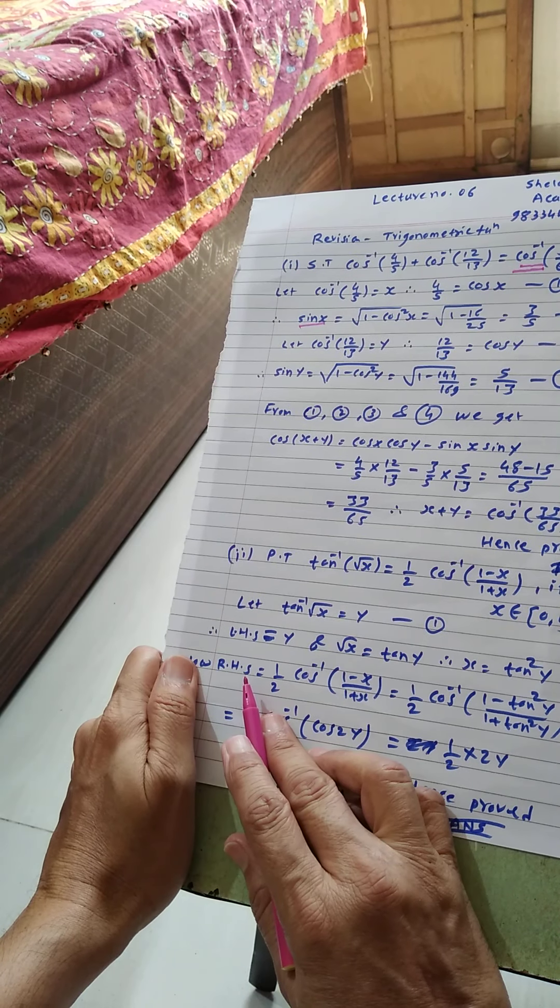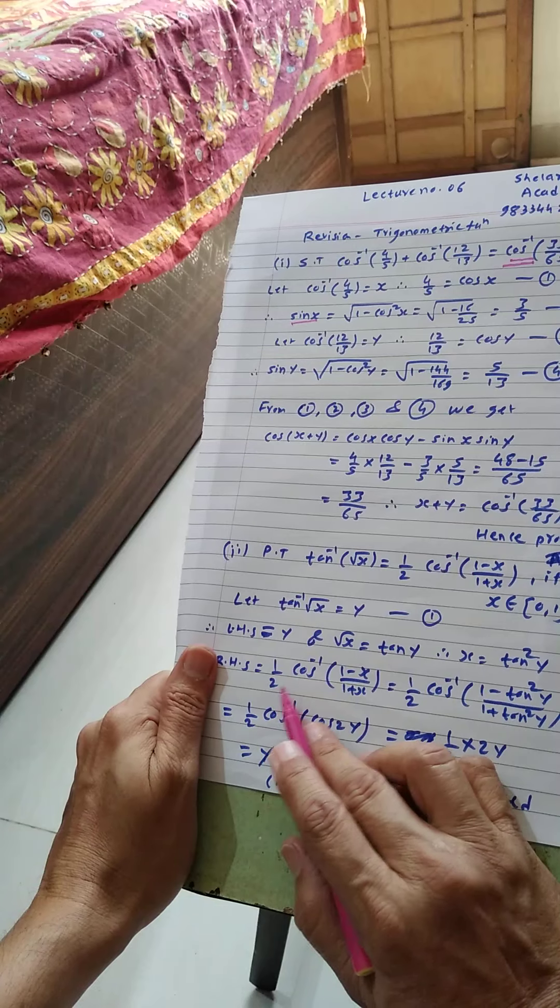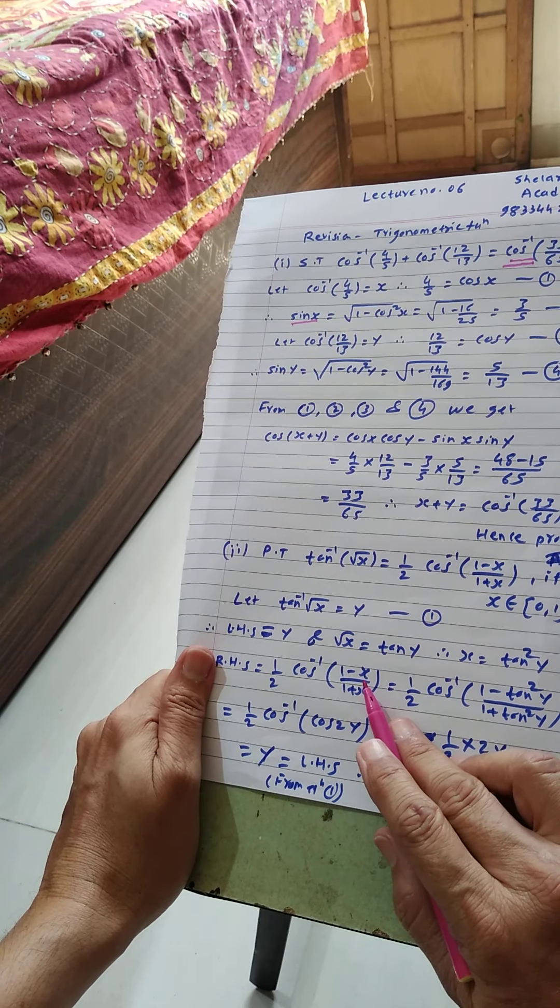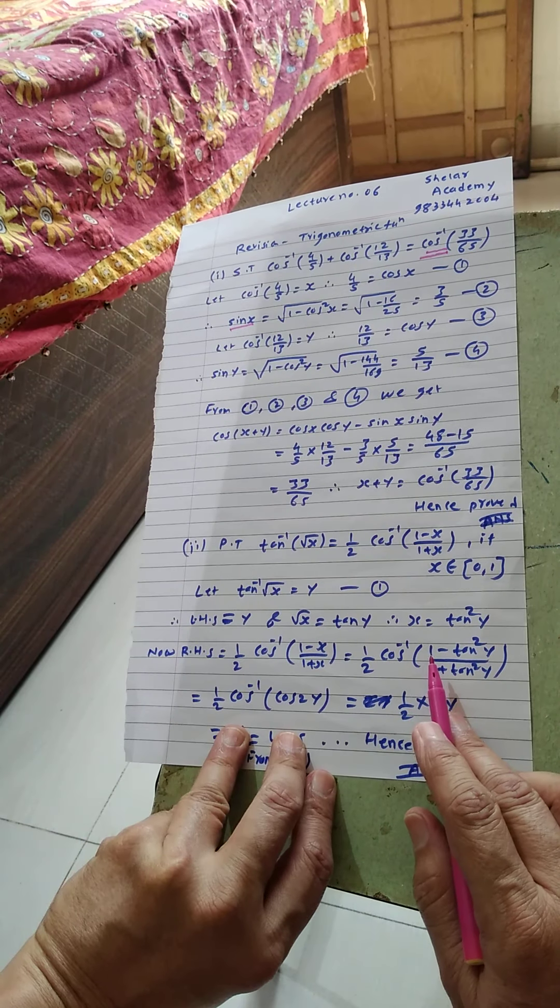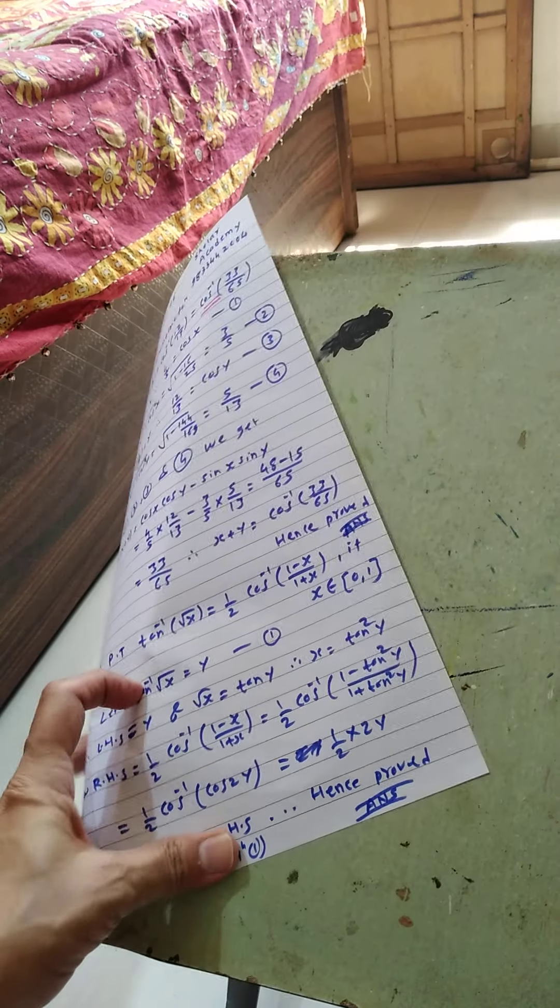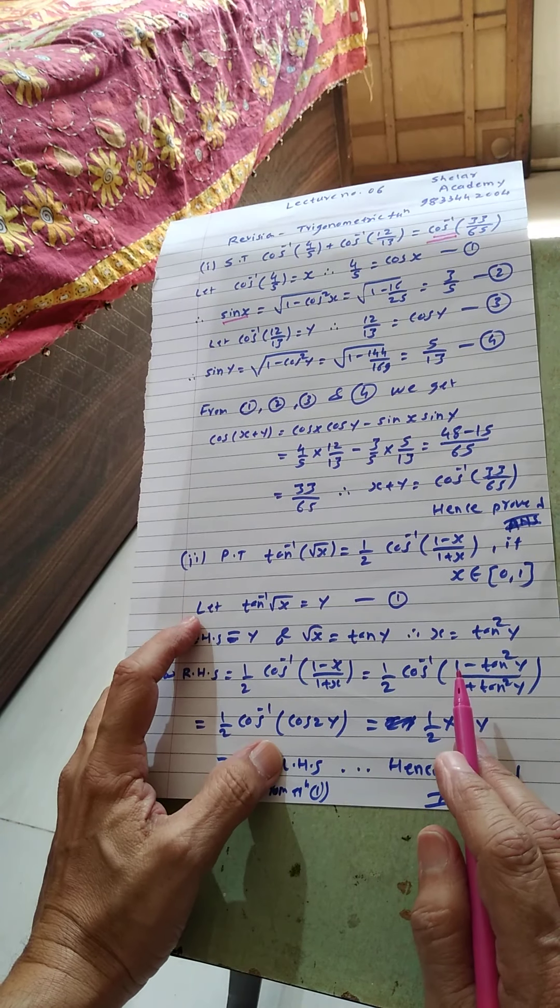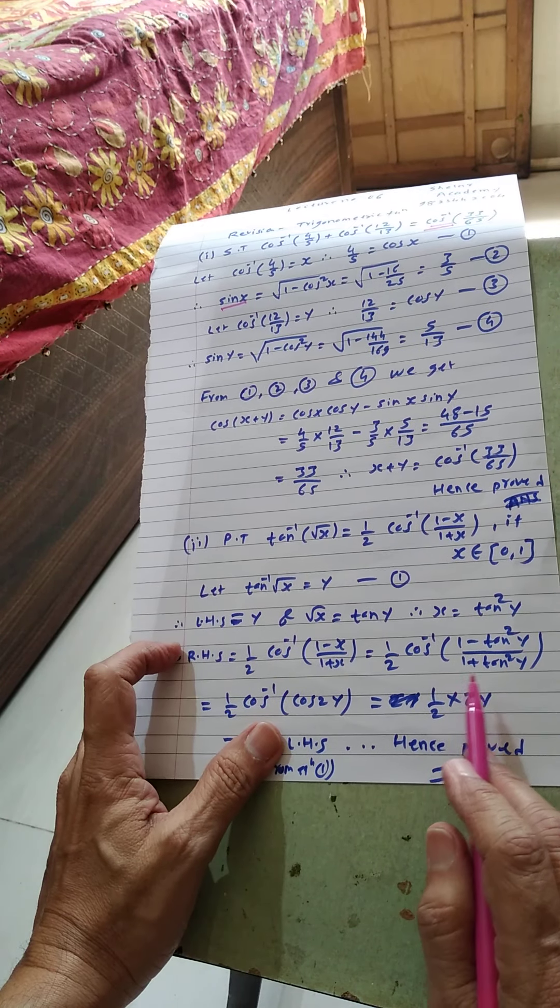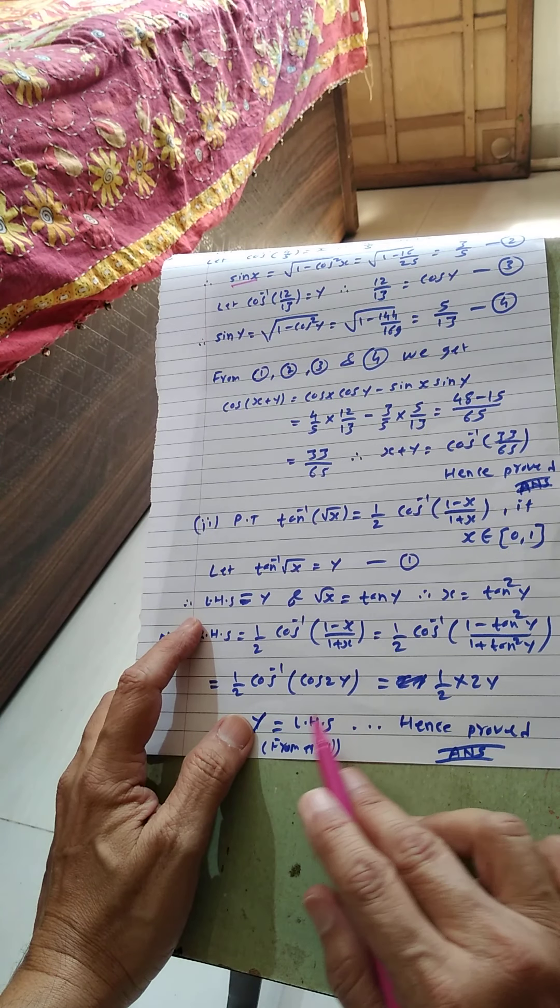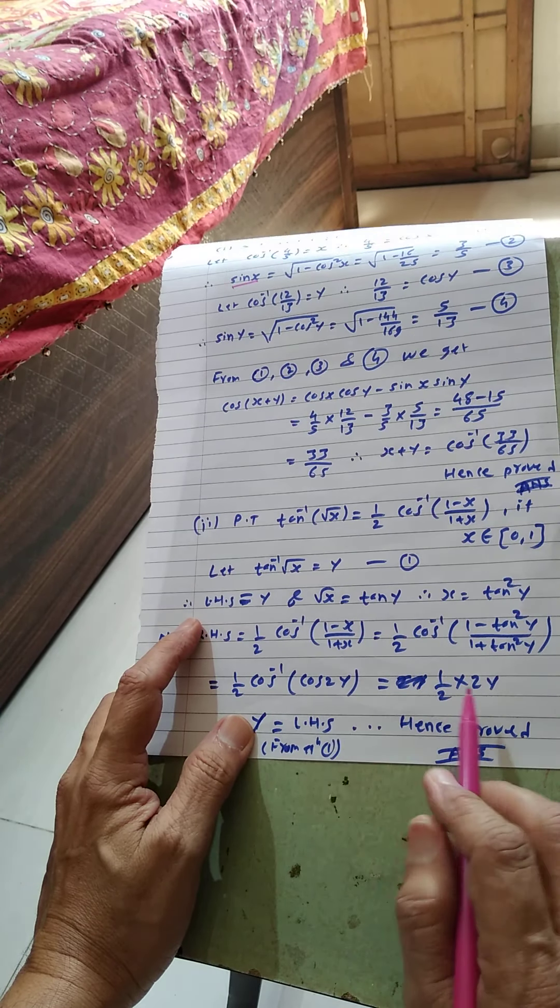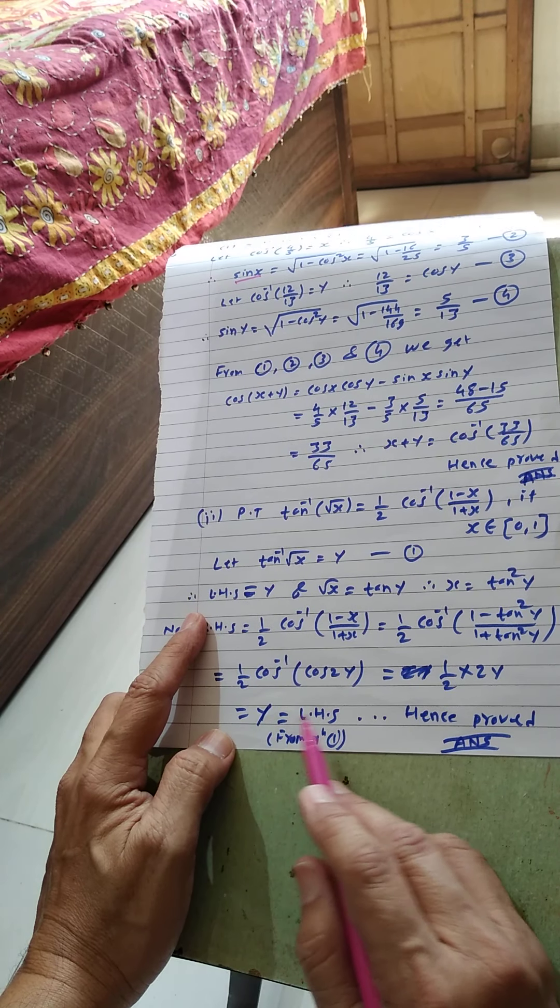Then we are starting from RHS because LHS is only y. RHS is 1 by 2 cos inverse of 1 minus x upon 1 plus x, is equal to 1 by 2 bracket, cos inverse bracket, 1 minus tan square y divided by 1 plus tan square y. And 1 minus tan square y upon 1 plus tan square y formula is cos 2y, cos 2 theta formula. And cos inverse of cos 2y is 2y into 1 by 2, that is equal to y, that is LHS. Hence proved.